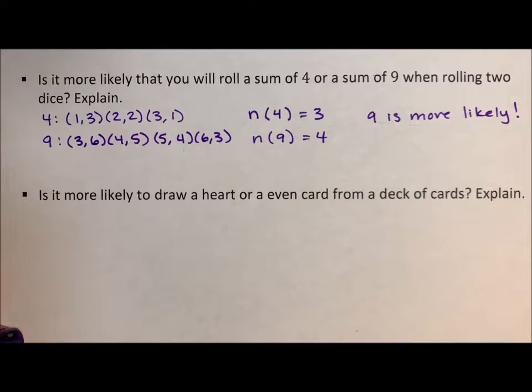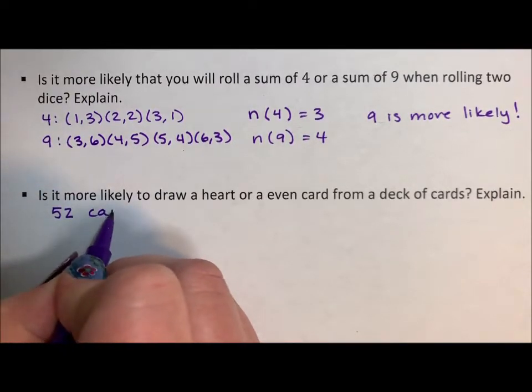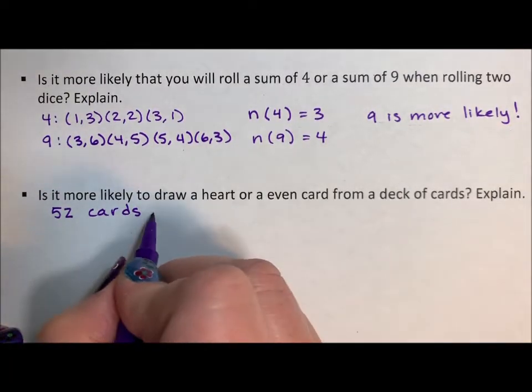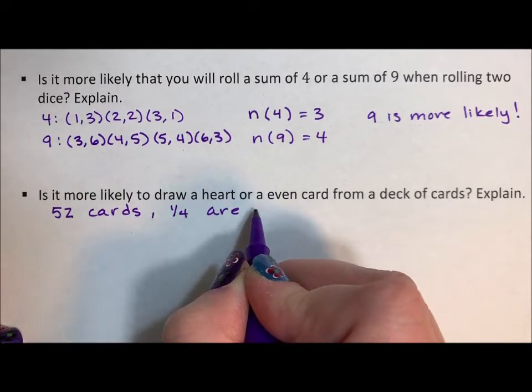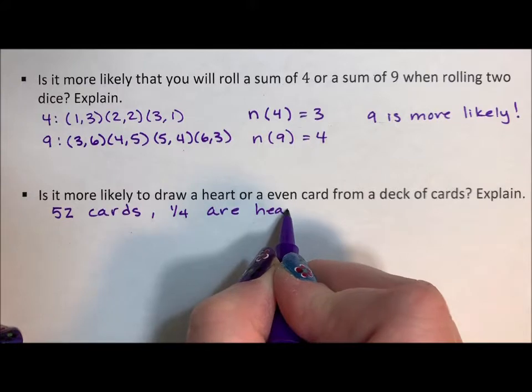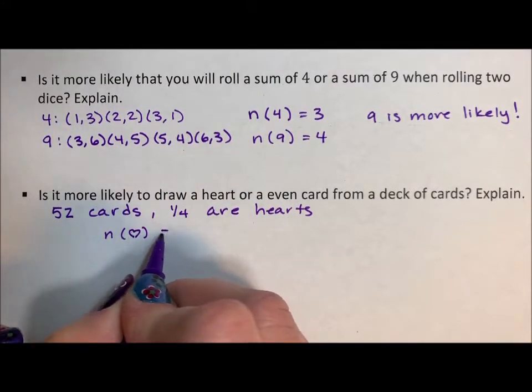Is it more likely to draw a heart or an even card from a deck of cards? So a deck of cards has 52 cards and one quarter are hearts. So the number of hearts is 13.